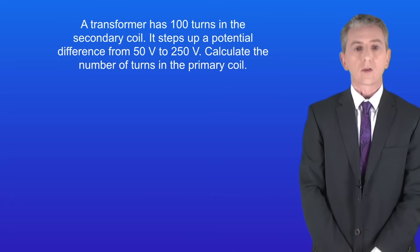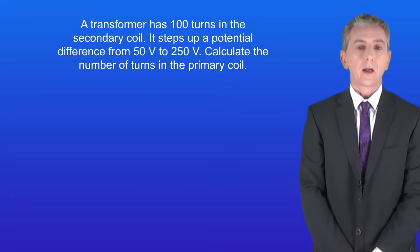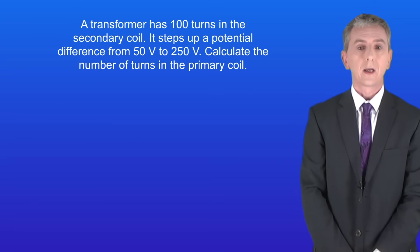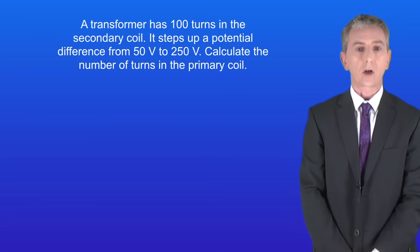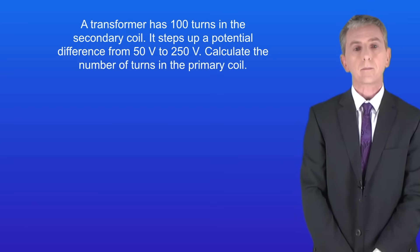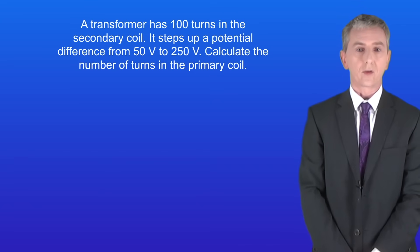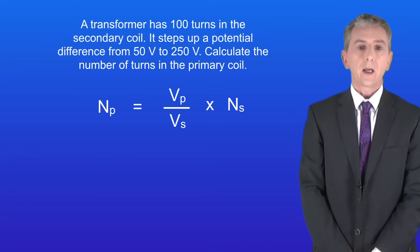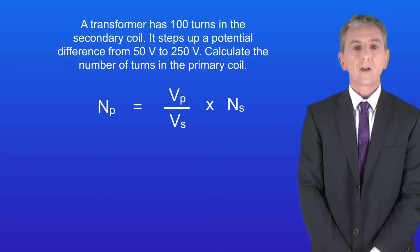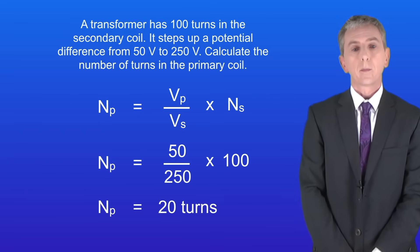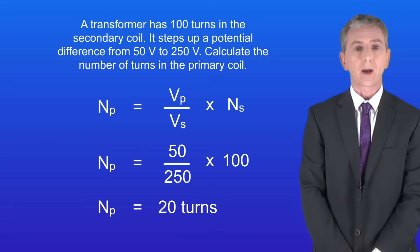Here's another question for you: a transformer has 100 turns in the secondary coil. It steps up a potential difference from 50 volts to 250 volts. Calculate the number of turns in the primary coil. We can rearrange the equation for the number of turns in the primary coil, and putting in the numbers gives us a value of 20 turns for the primary coil.